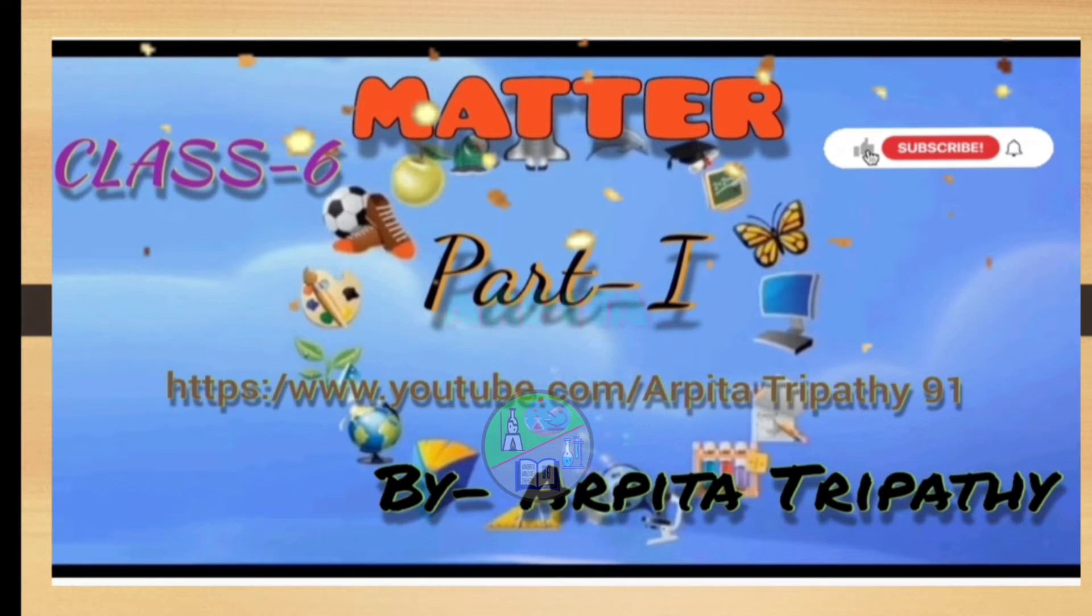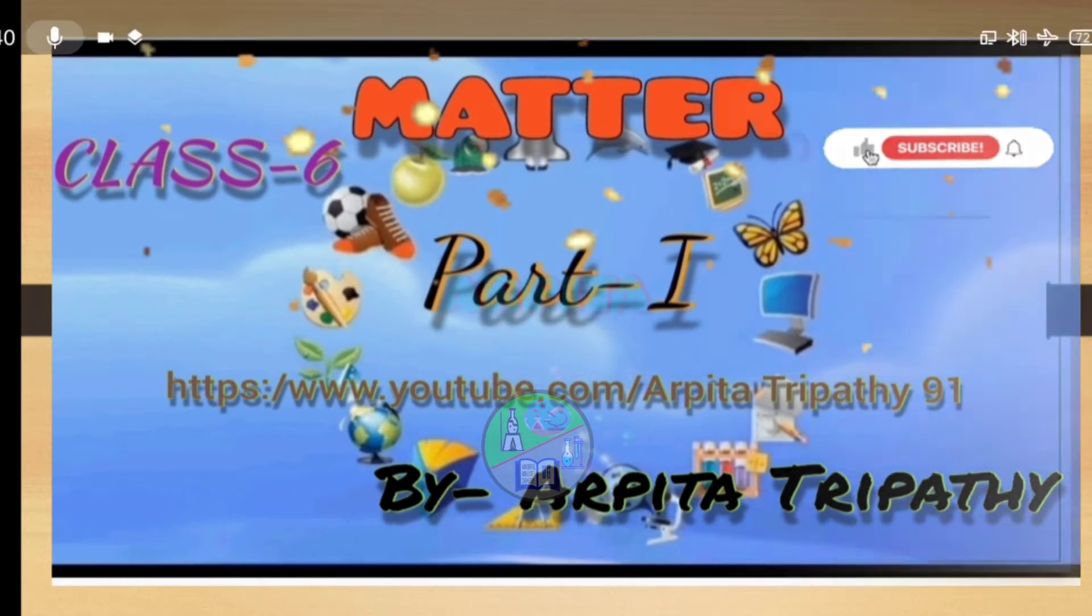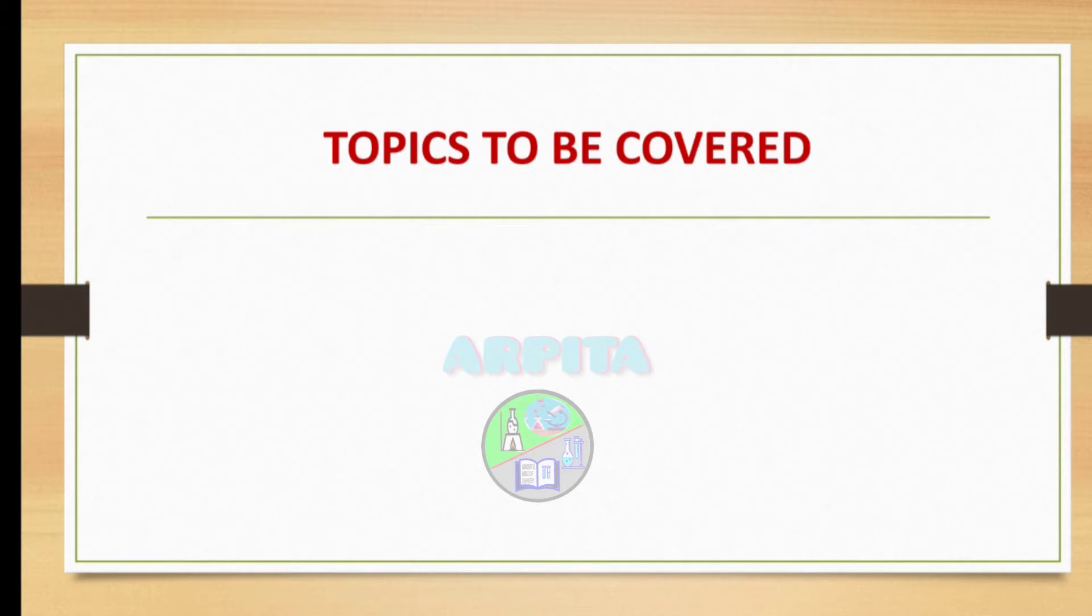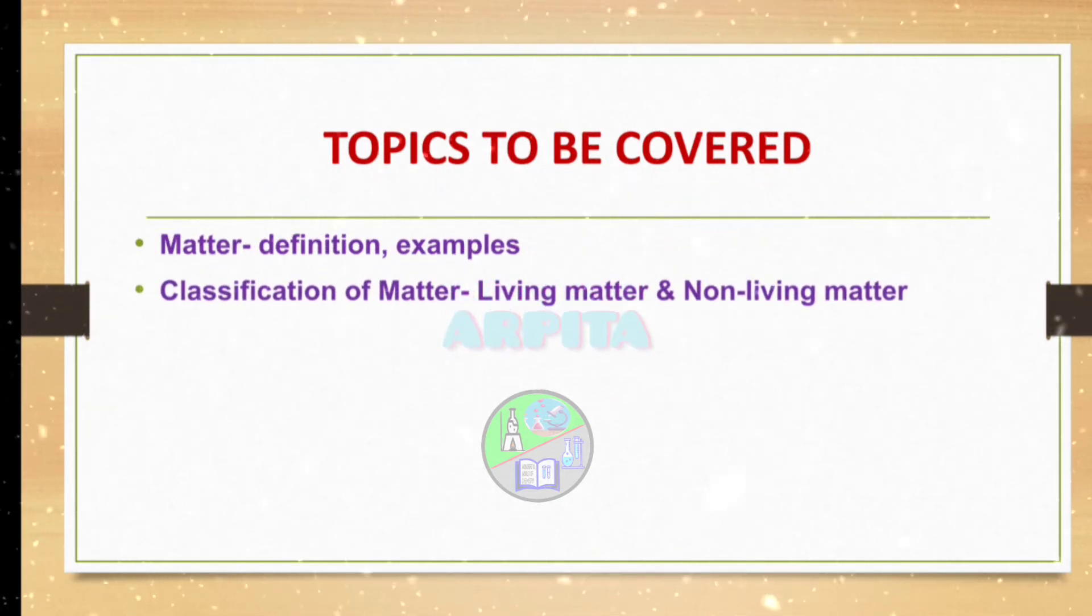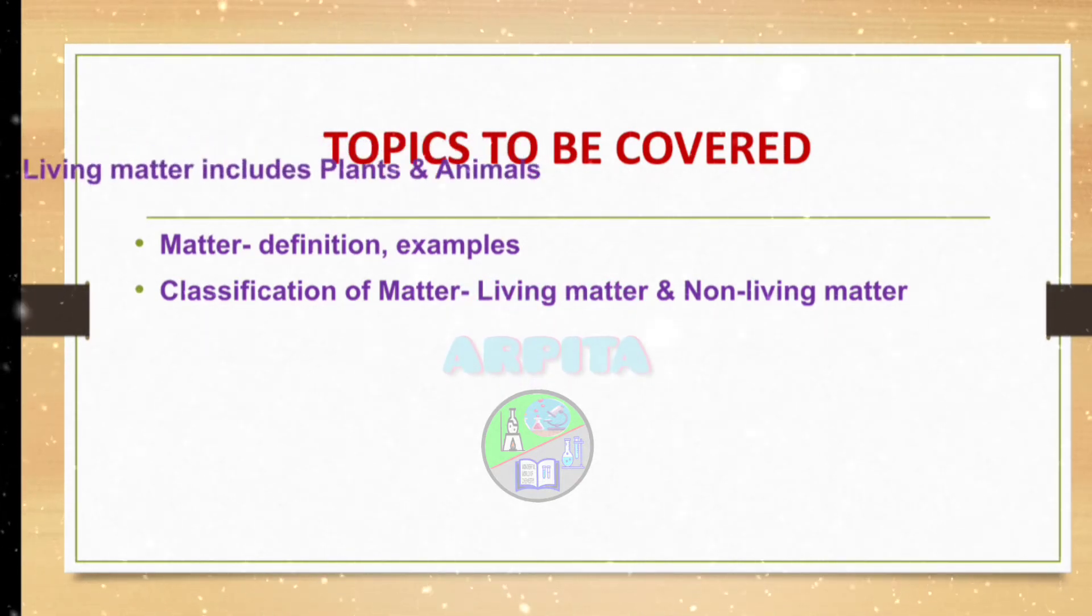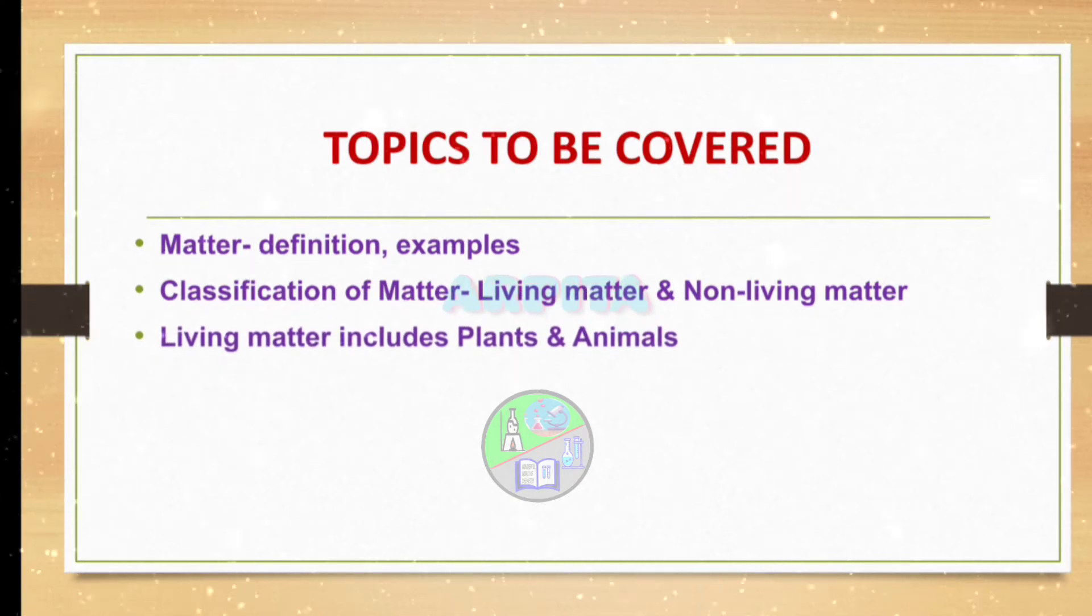Now let's take a glance about the parts that I'll be covering here. First we will know about the definition of matter along with its examples, then we'll move on to the classification of matter which includes living and non-living matter. Living matter includes two groups: plants and animals, whereas the non-living matters include natural matter and man-made matter.